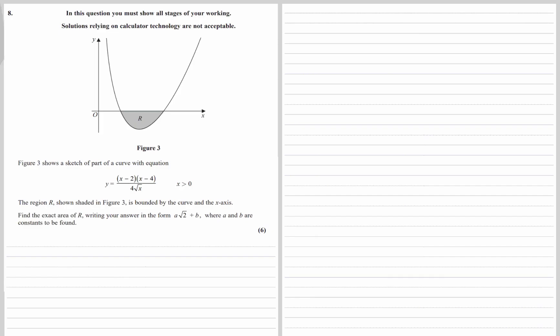So we're finding the area under the curve — that's going to mean integration. We're going to have to get it ready to integrate, so get it in the right form first. But before we do that, we could identify what the two limits are: the two points where the graph crosses the x-axis, where y equals 0.